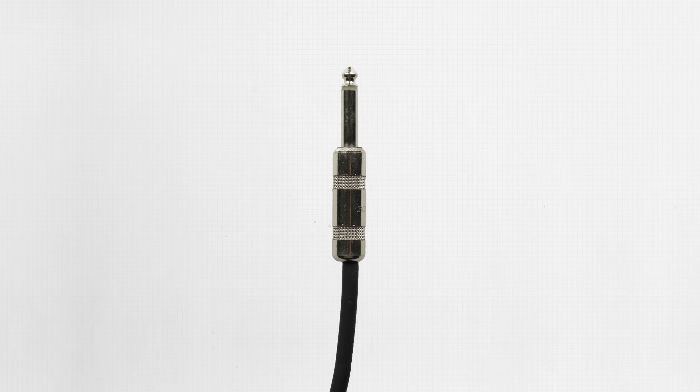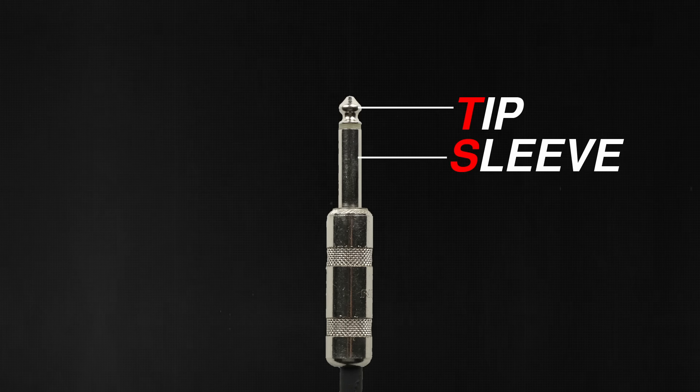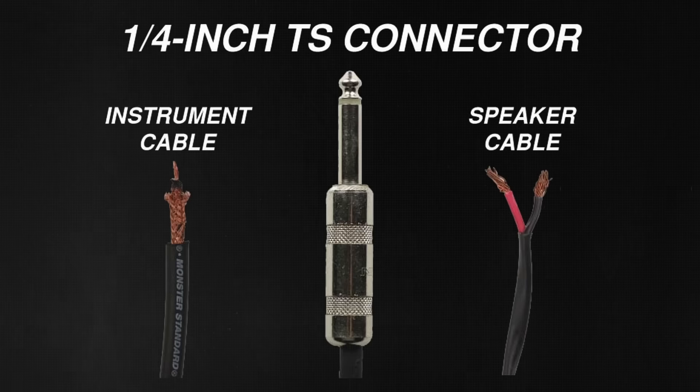The next connector I want to mention is a quarter-inch TS connector. This is similar to the quarter-inch TRS, but rather than a tip, a ring, and a sleeve, a TS connector only has a tip and a sleeve. In audio production, you usually encounter the TS connector as either an instrument cable or a speaker cable, and it's important that you choose the right one, because even though the signal will pass, these two cables should not be used interchangeably. If you open up a speaker cable, you'll see that it has two identical conductors — just like the positive and negative conductors in any speaker cable. They're thick, as they're intended to carry signal from an amplifier to a speaker cabinet.